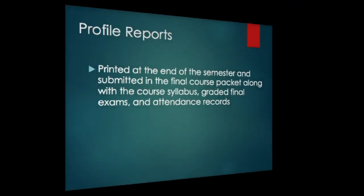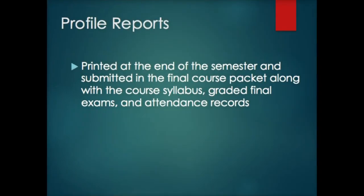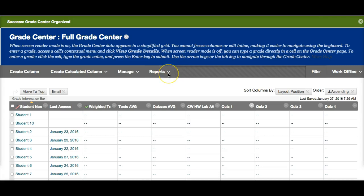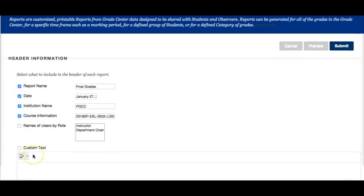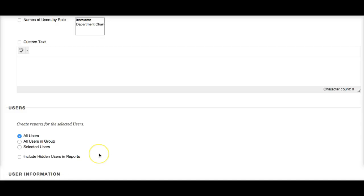End of the semester, final grade profile sheets need to be submitted to the language studies department, along with the course syllabus, graded final exams, and attendance records. The blackboard grade book makes the printing of profile sheets simple. To print profile sheets, you just need to go to reports. Create report. You can say report name: final grades. You can have the date printed, institution, course information. And users. You can say all users.